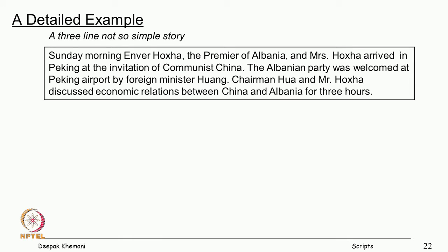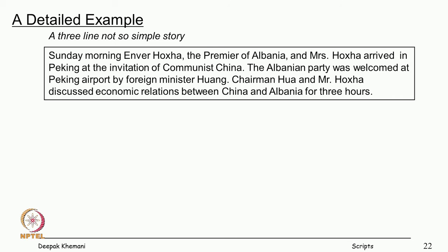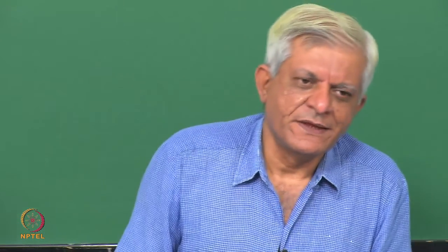Now I want to look at another story and this time look at the actual trace from the program SAM, which was written around 1974. It is a three-line story. Remember there is an English language phase, then a PP memory phase, then the script applier, and then if necessary the language generator. The story is about two people from Albania — Enver Hoxha and Mrs. Hoxha — who arrive in Peking at the invitation of communist China. The program demonstrates how much it can answer about what it has understood from the story.